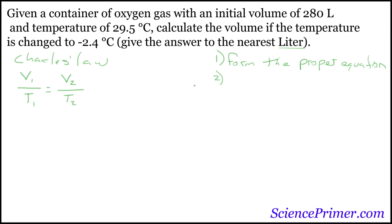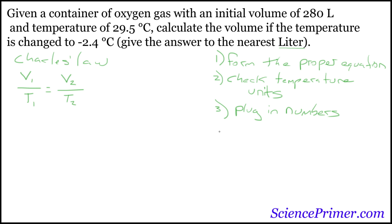The second step: because this relationship depends upon temperature being in Kelvin, we need to check the units to make sure they're in Kelvin. Then step three, once we have the proper units and the proper form of the equation, we'll plug in the numbers. Step four, we solve the problem. And step five, I'm going to suggest a final step which is to check the units again, particularly temperature.